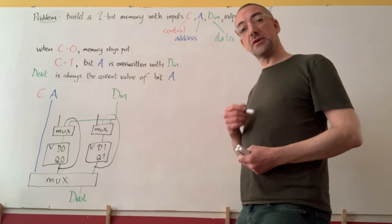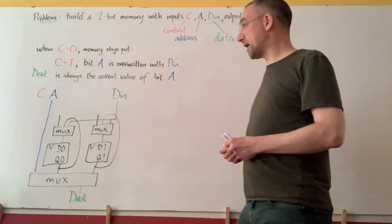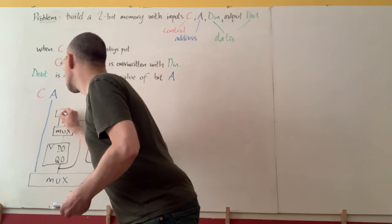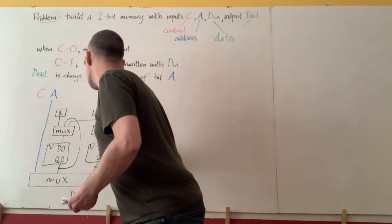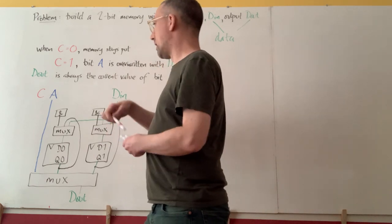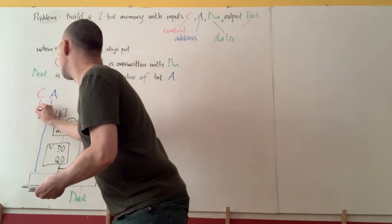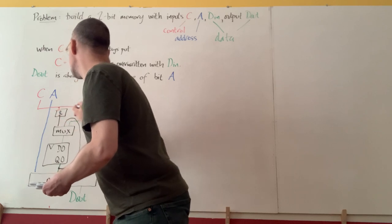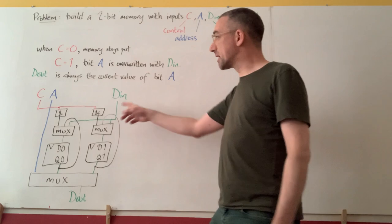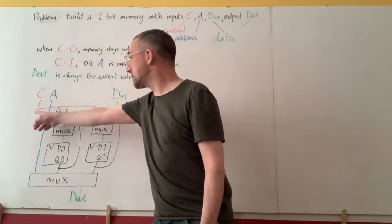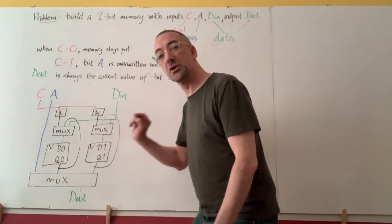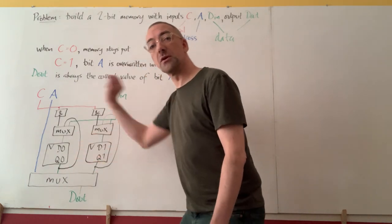So that calls for the traditional technique of AND masking. Stick in some AND gates. And we wire one input of each up to the control signal. So that straight away gives us the property that when C is zero, these muxes both get zero and each memory updates from its old value.